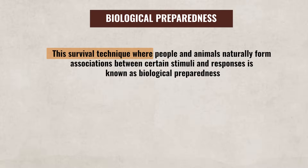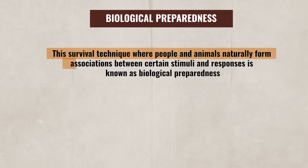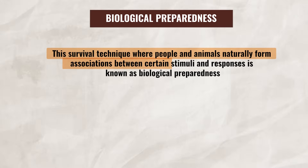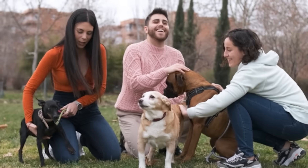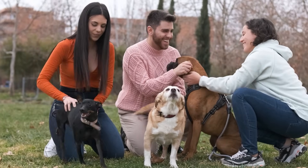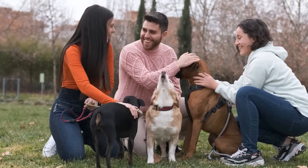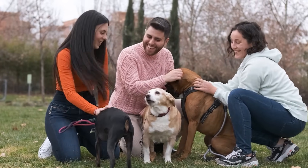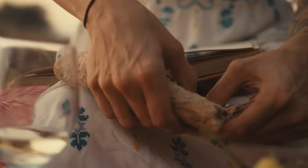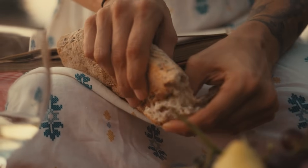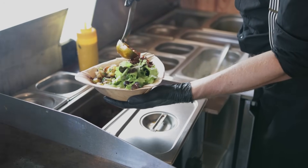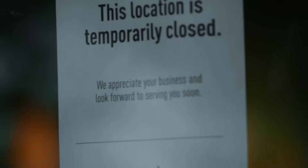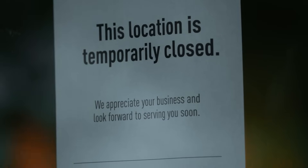Taste aversions can happen after one pairing because our bodies and brains are wired to quickly identify harmful associations. This survival technique, where people and animals naturally form associations between certain stimuli and responses, is known as biological preparedness. We can see that humans and animals are biologically predisposed to associate food with illness more quickly than other stimuli, to help them avoid harmful foods in the future. This is just one of the reasons why restaurants take food safety so seriously — one negative customer experience can permanently tarnish their reputation.